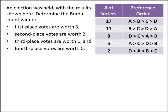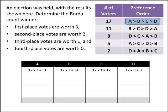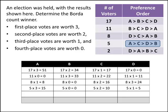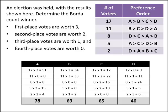With the Borda count and four candidates, first place votes are worth 3, second place worth 2, third place worth 1, and fourth place worth 0. We fill in our chart the same way as before. In the first row, 17 voters — A is first (17 times 3), B is second (17 times 2), C is third (17 times 1), D is fourth (17 times 0 = 0). We fill in the remaining rows similarly. Adding up the totals: A gets 78 points, B gets 69, C gets 65, D gets 46. The winner is the candidate with the largest total, which is A.